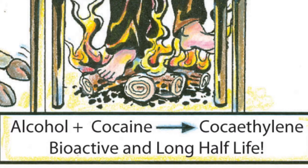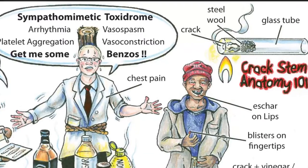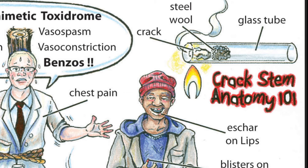Coca ethylene is actually quite cardiotoxic. People who smoke crack cocaine often consume it through a crack stem, which is simply a hollow glass tube. They'll put a small piece of steel wool or, in many cases, a piece of Chore Boy — a brand of copper-based wiring used for scrubbing pots — because copper has a much higher burning temperature than steel.